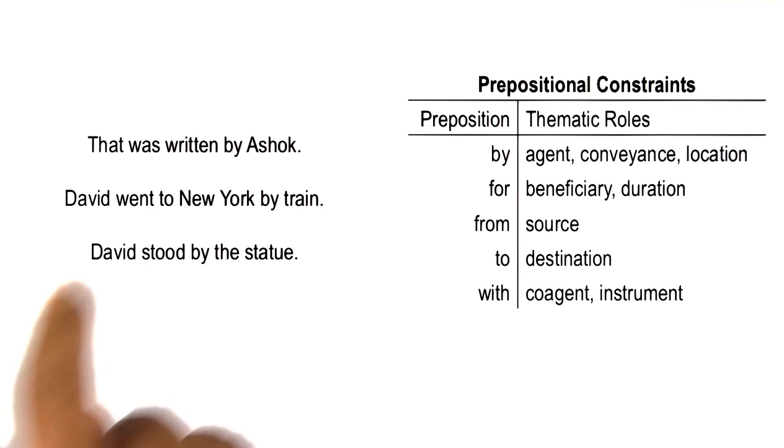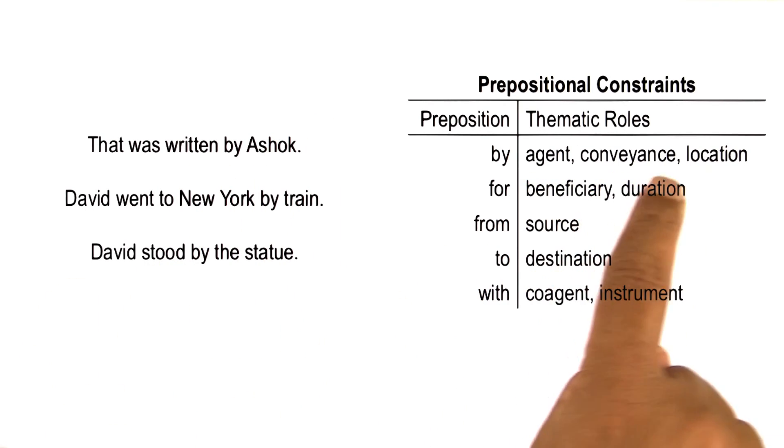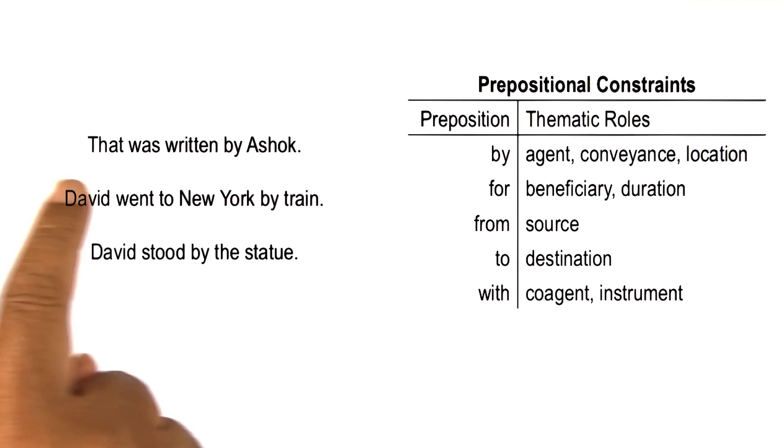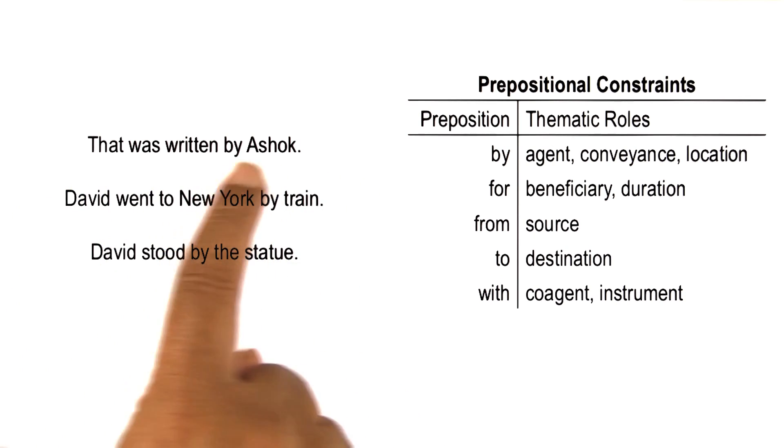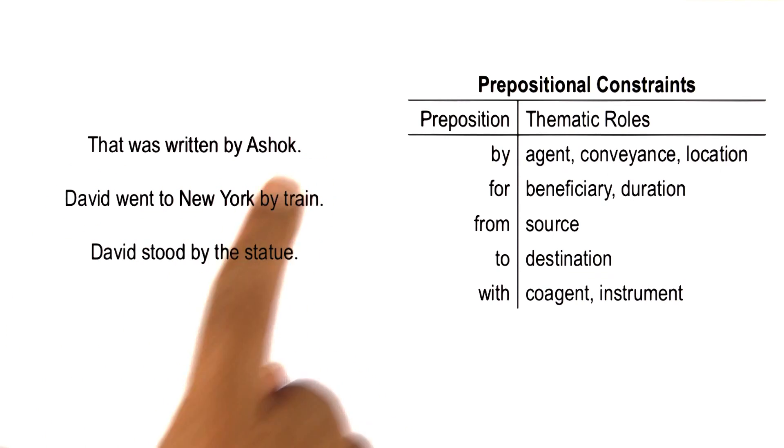But first let us look at examples of the three kinds of semantic categories that by may point to. So here is a sentence in which by points to an agent. That was written by Ashok.